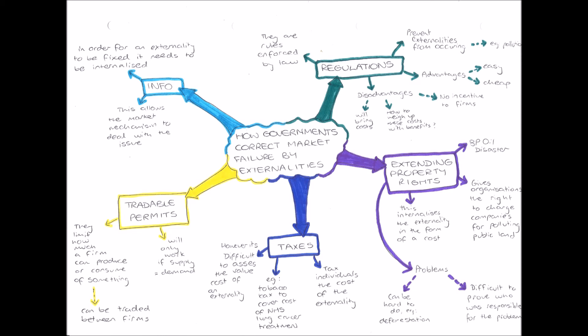Next, we have taxes. Taxes charge individuals for the cost of the externality — whereas extending property rights charges big companies, taxes charge individuals. For example, the tax on tobacco: the negative externality here is health issues to the smoker and people around them, such as lung cancer. The government uses the tax revenue to fund NHS lung cancer treatment, thereby internalizing the externality within the pricing mechanism by taxing individuals.